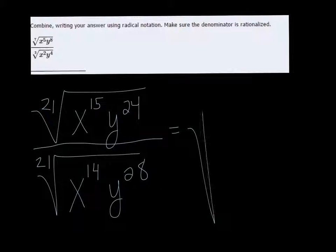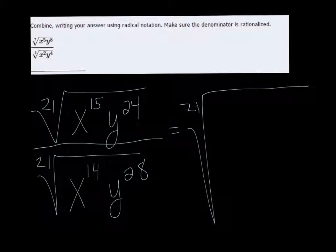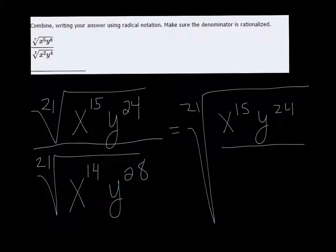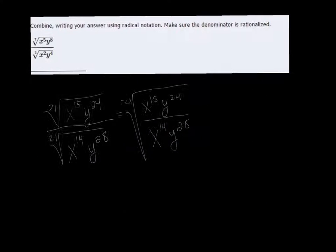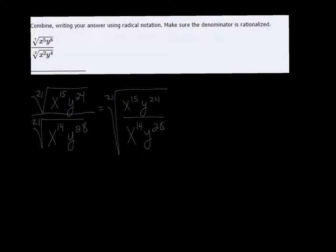Now I can put them together in one big radical, so I get x to the 15th, y to the 24th, and x to the 14th, y to the 28th on the bottom. And since they're combined like this now, we can actually simplify the inside.